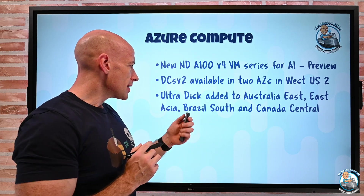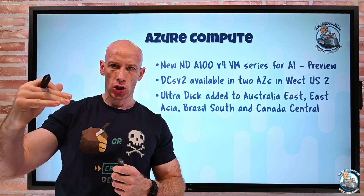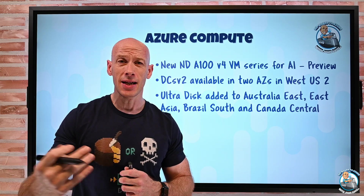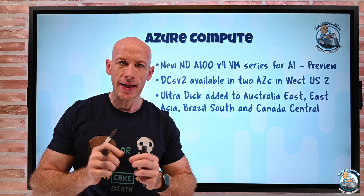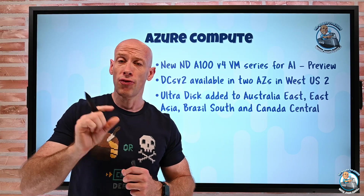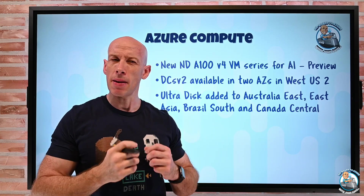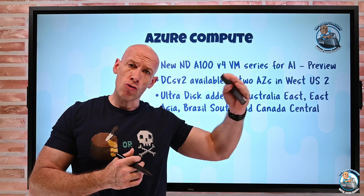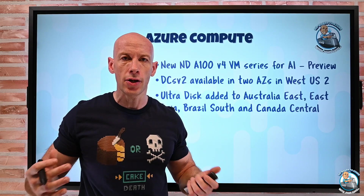UltraDisk has been added to Australia East, East Asia, Brazil South, and Canada Central. UltraDisk is top of the food chain for managed storage options — it can go to massive capacities, massive throughput, and massive IOPS. I can actually tweak those three things individually and change performance dynamically while the disk is running. For example, before a big peak job I can ramp up IOPS and throughput, then ramp them back down to optimize spend — something you can't do with regular non-ultra disks.